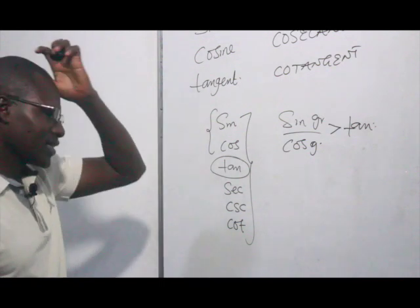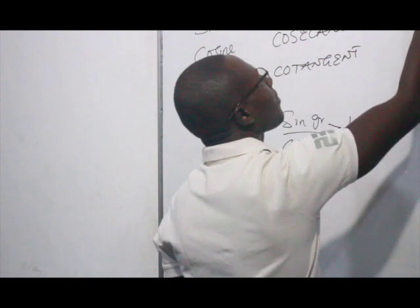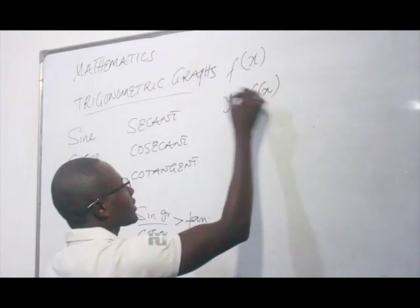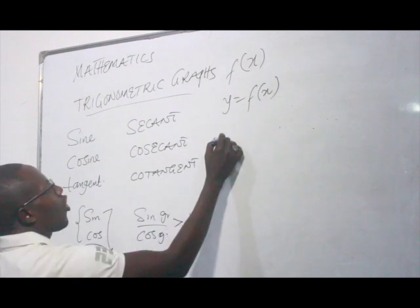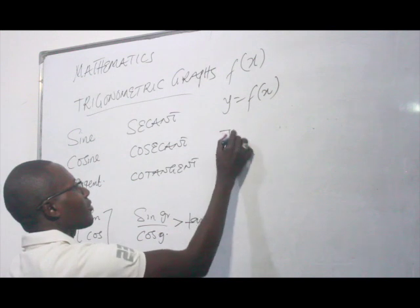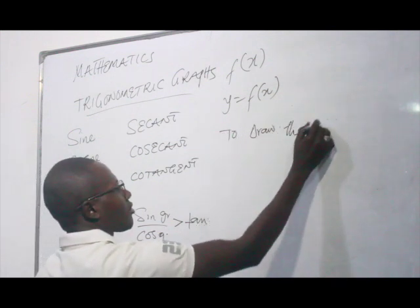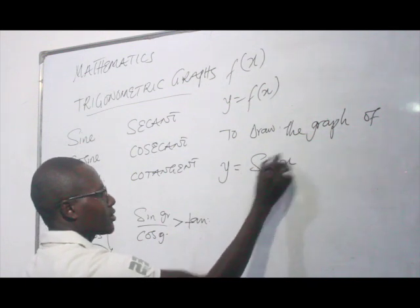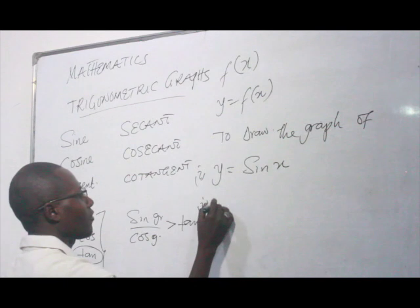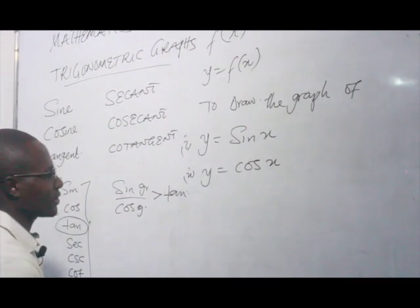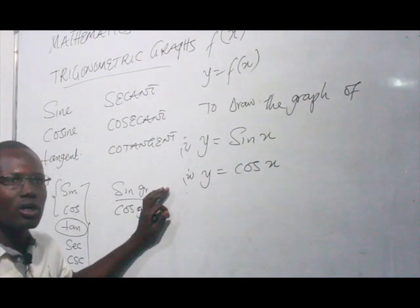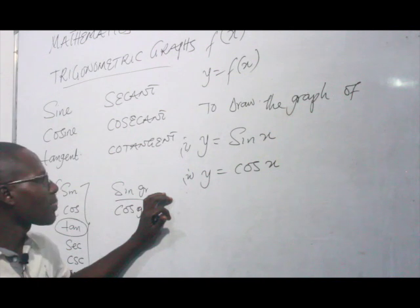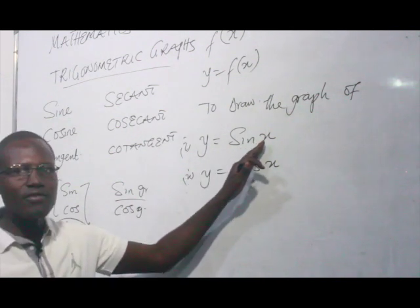Now let's look at the sine. Assume that we have a function y equals to f of x. To draw the graph of y equals to sine x, and y equals to cosine x — just like the types of graphs we've solved previously. We solved simultaneous, which is a linear graph, and then the quadratic graph.